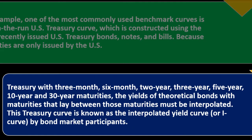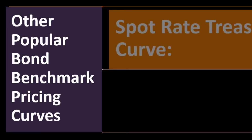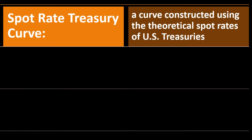One of the most commonly used benchmark curves is the on-the-run U.S. Treasury curve, constructed using the most recently issued U.S. Treasury bonds, notes, and bills. Because the Treasury only issues securities with three-month, six-month, two-year, three-year, five-year, ten-year, and thirty-year maturities, the yields of theoretical bonds with maturities between those must be interpolated. This Treasury curve is known as the interpolated yield curve, or the I-curve, by bond market participants.